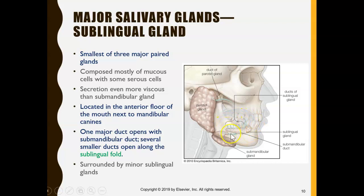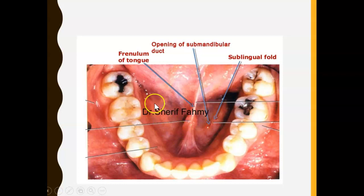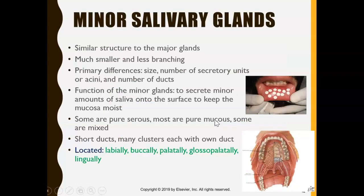The sublingual gland is the smallest major salivary gland. The saliva it produces is mostly mucus — mostly thick — with some serous cells producing thin saliva as well. It actually produces the thickest saliva of the three major glands. It has many ducts and drains into the sublingual fold, the slight fold of tissue visible on the floor of the mouth near the lingual frenum.